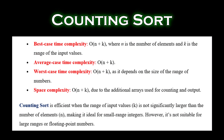Best case time complexity is O(n + k), where n is the number of elements and k is the range of the input values. Average case time complexity is O(n + k). Worst case time complexity is also O(n + k), as it depends on the size of the range of numbers.